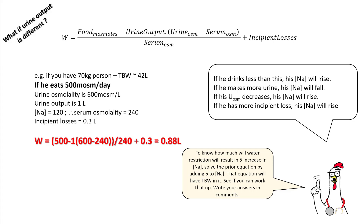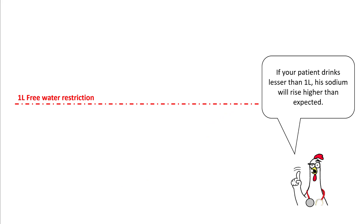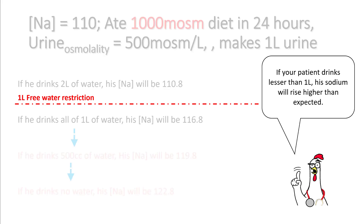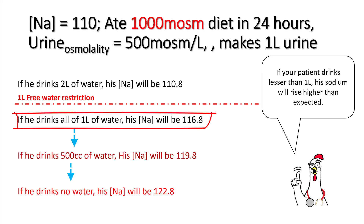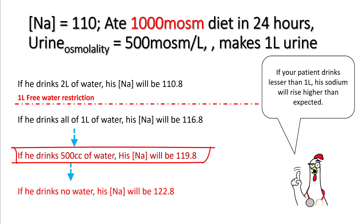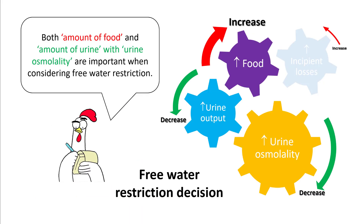One important thing to remember: patients don't always drink the total amount you've prescribed for water restriction. If your patient is placed on one liter restriction but drinks less, sodium will rise higher than expected. For example, with sodium of 110, eating 1,000 mOsm, urine osmolality 500, making one liter of urine: if he drinks one liter, sodium rises to 116 by the next day; if he drinks 500 cc, sodium reaches 119; if he drinks no water, sodium reaches 122.